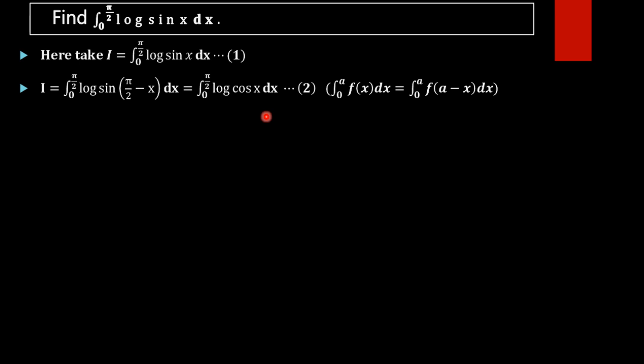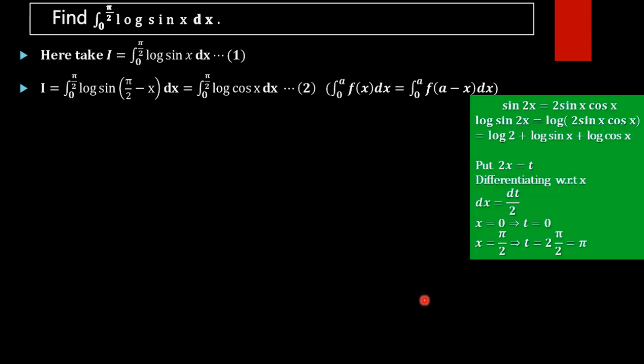This is because sin(π/2 − x) = cos x by trigonometric identity. So we have I equal to the integral from 0 to π/2 of log(cos x) dx. Also note that sin 2x = 2 sin x cos x.